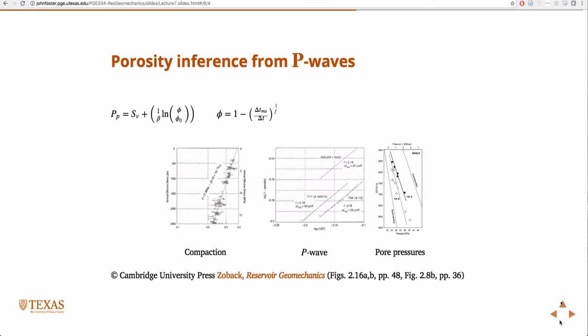The goal is to estimate pore pressure. This equation here is the solution to Athy's equation — you're solving Athy's relation for the pore pressure. Sv we can easily estimate, about one psi per foot. Beta we got from the laboratory compaction experiment. We know what the initial porosity is. So now we just need to know what the actual porosity is.